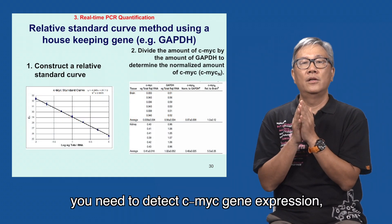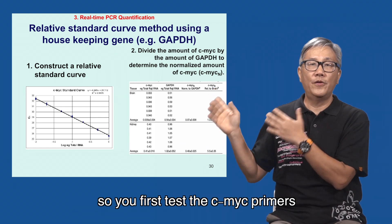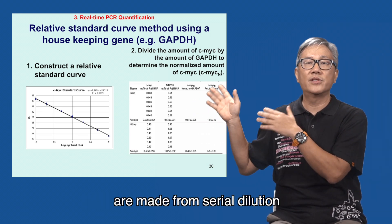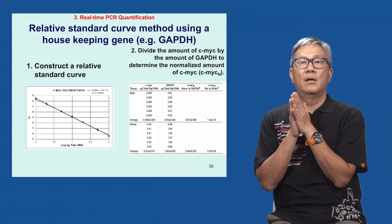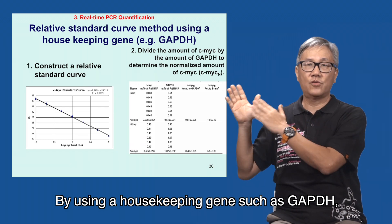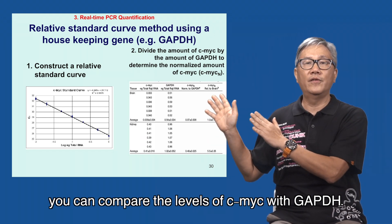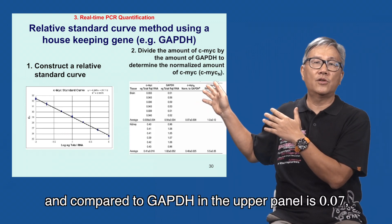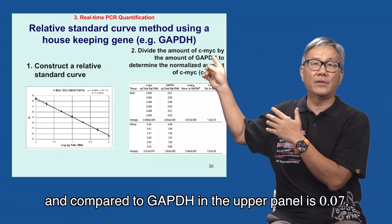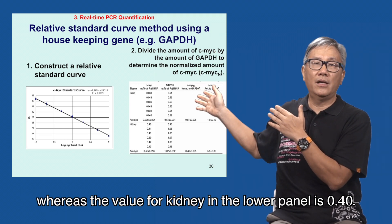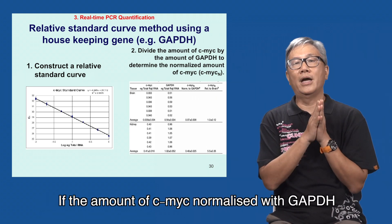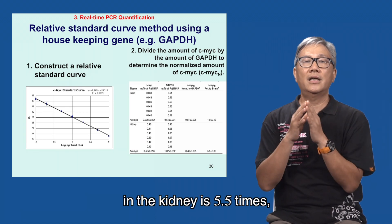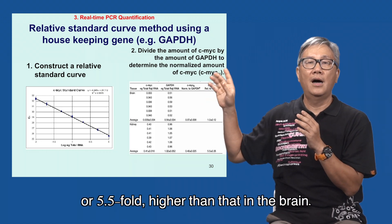As an example, you need to detect CMYK gene expression. You first test the CMYK primers and construct a standard curve with different amounts of total RNA used for real-time PCR detection. By using a housekeeping gene such as GAPDH, you can compare the levels of CMYK with GAPDH. The level of CMYK for six brain samples normalized to GAPDH in the upper panel is 0.07, whereas the value for kidney in the lower panel is 0.4. If the amount of CMYK normalized with GAPDH is set as 1, the fold induction or the level of CMYK in the kidney is 5.5 times, or 5.5-fold higher than that in the brain.